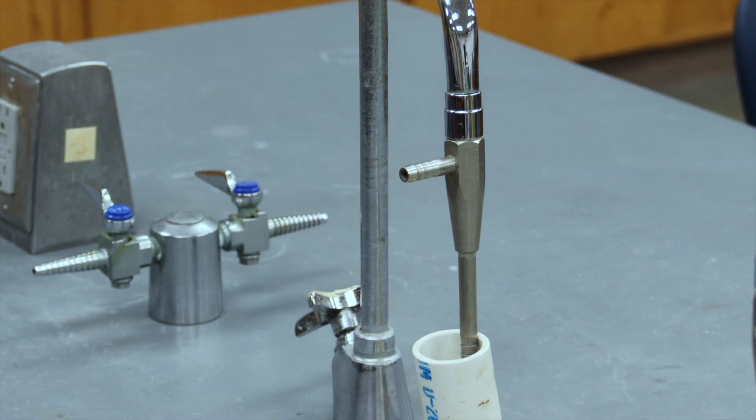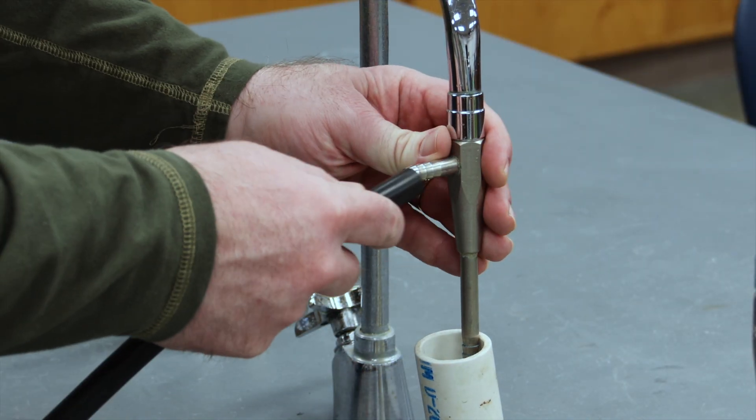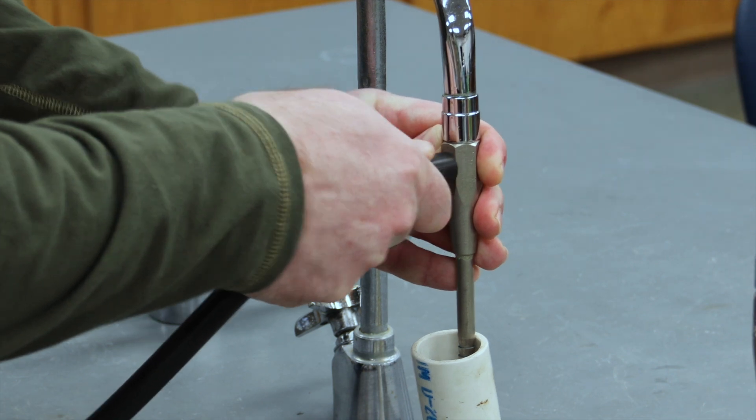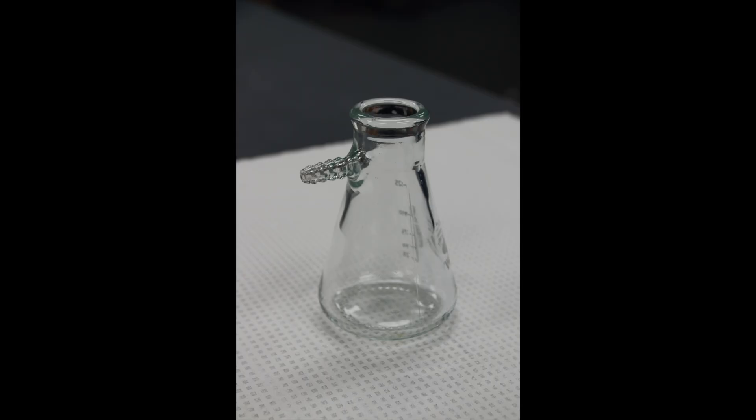You'll want to attach a thick-walled rubber tube to this vacuum inlet. You'll then attach the end of that hose to the glass barb on the vacuum flask. The vacuum flask is a special type of conical flask with thick walls that allow the flask to withstand the vacuum.